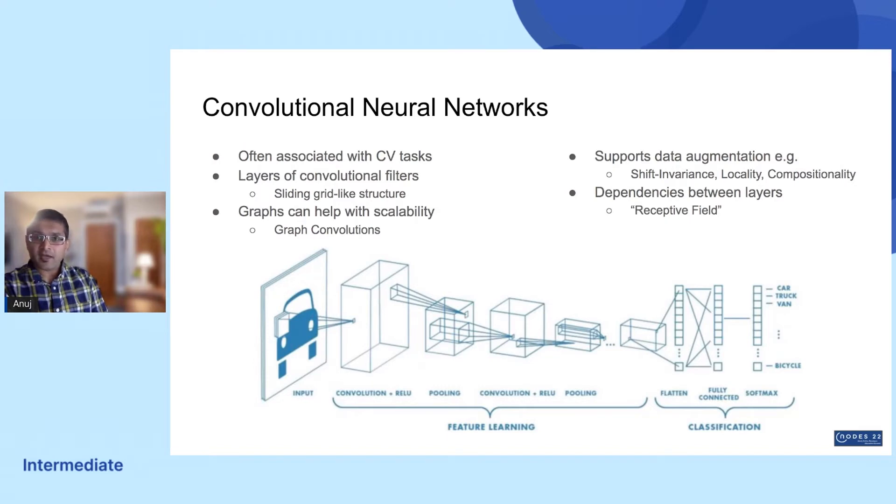CNNs are also well suited for data augmentation convolution techniques, such as shift invariance, which is translating your data in ways that still retain its qualities, for example, zooming and rotating an image. Spatial locality, which is the relation of pixels to the pixels near them. And compositionality, which is a hierarchical or categorical labeling of an image based on its components.